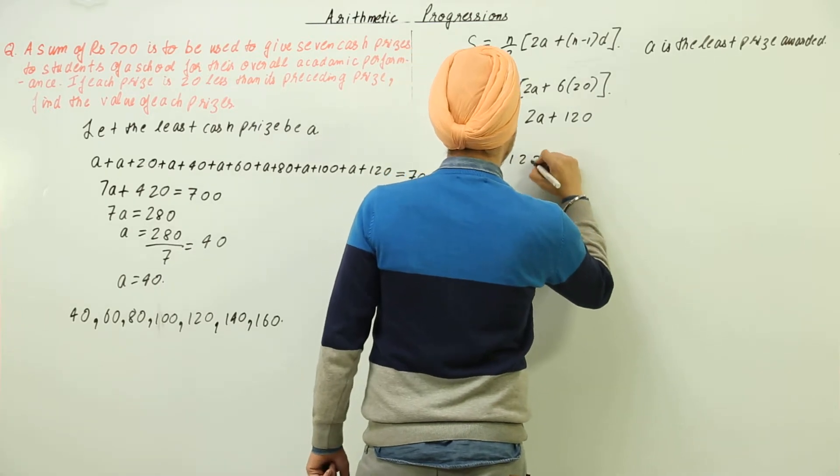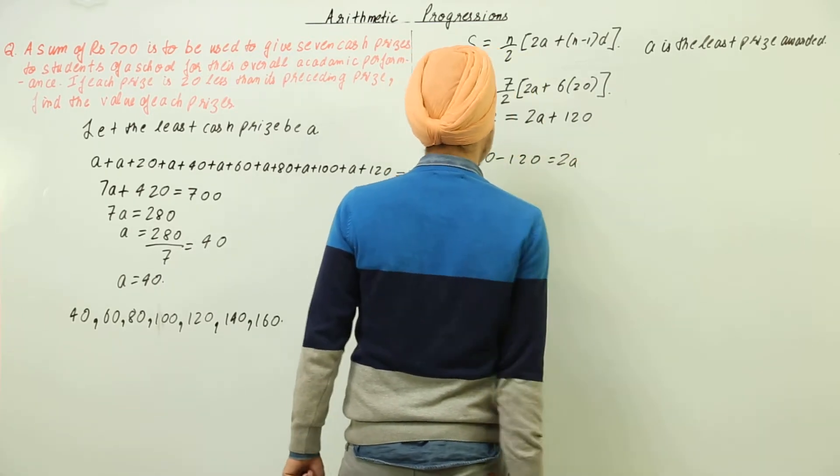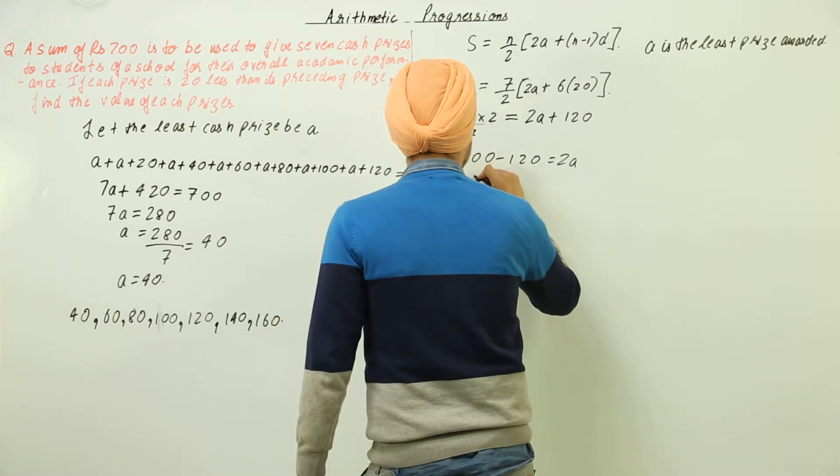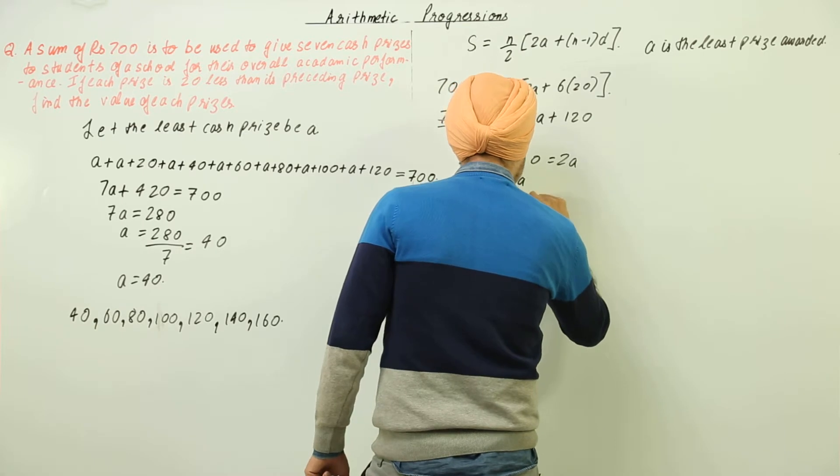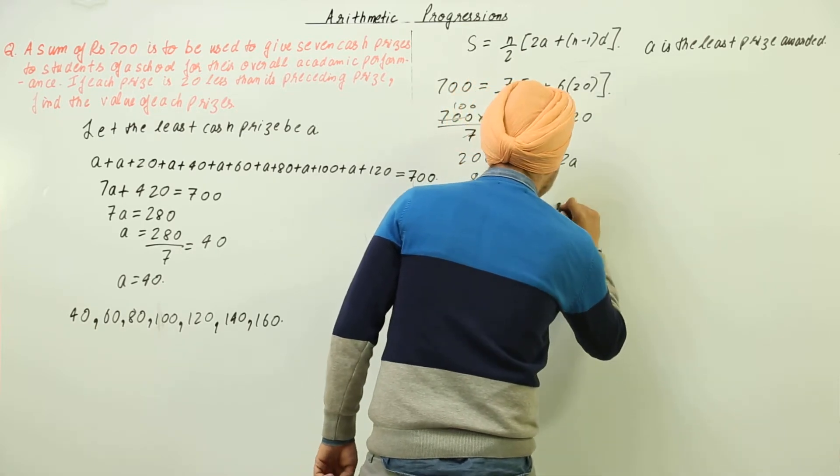200 minus 120 is equal to 2a. And we have 80 is equal to 2a, or a here is equal to 80 by 2, that is equal to 40.